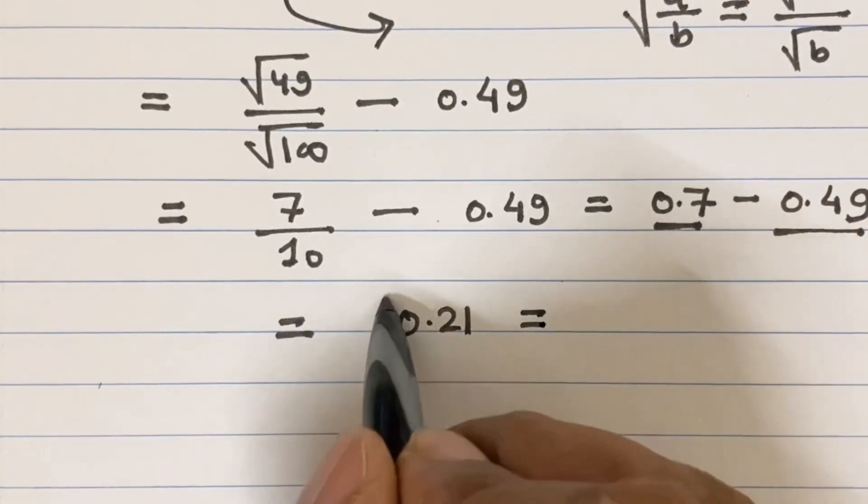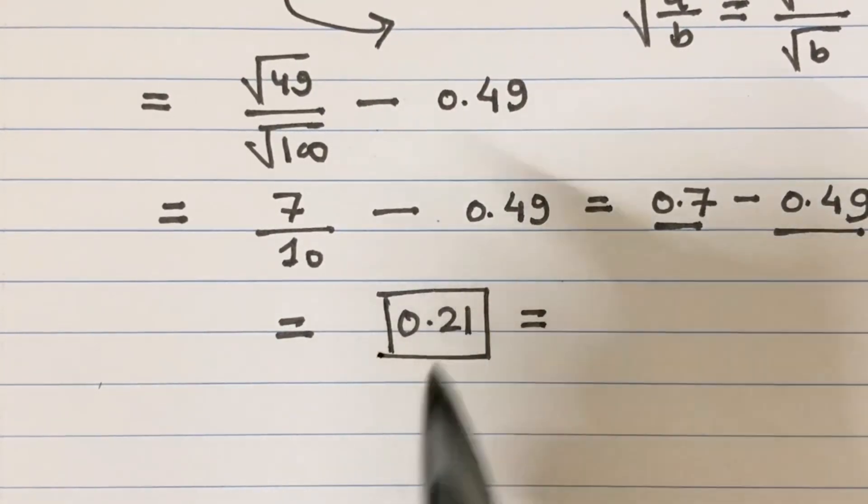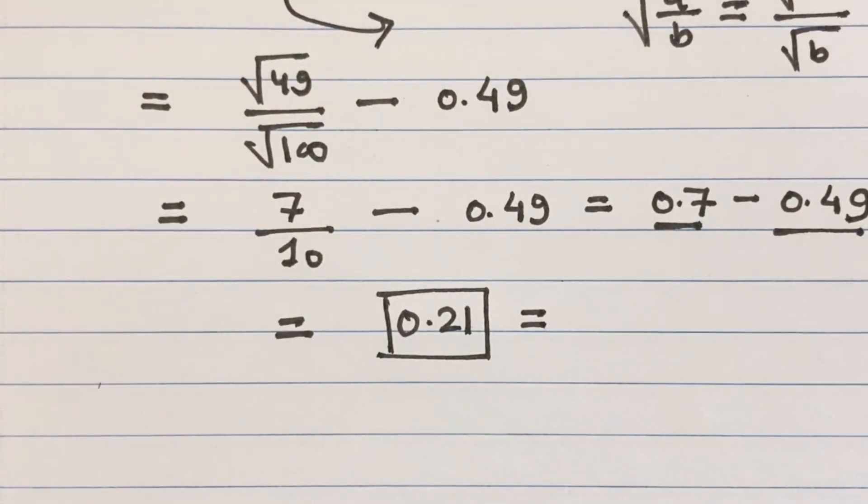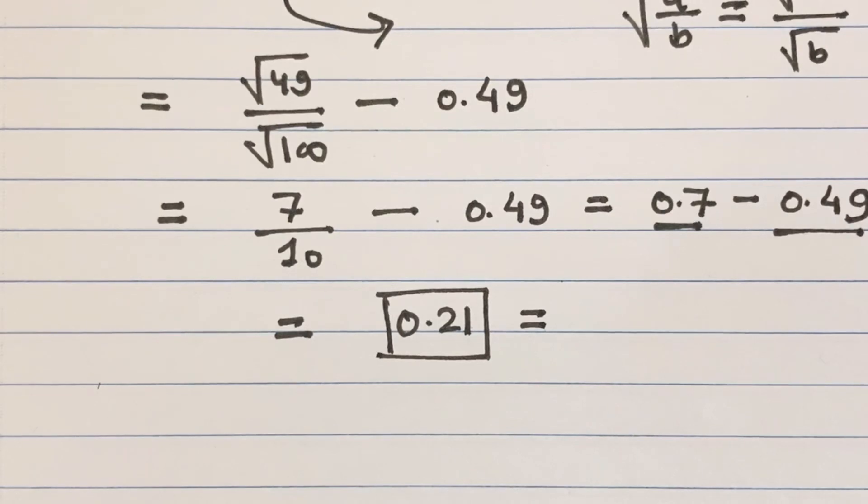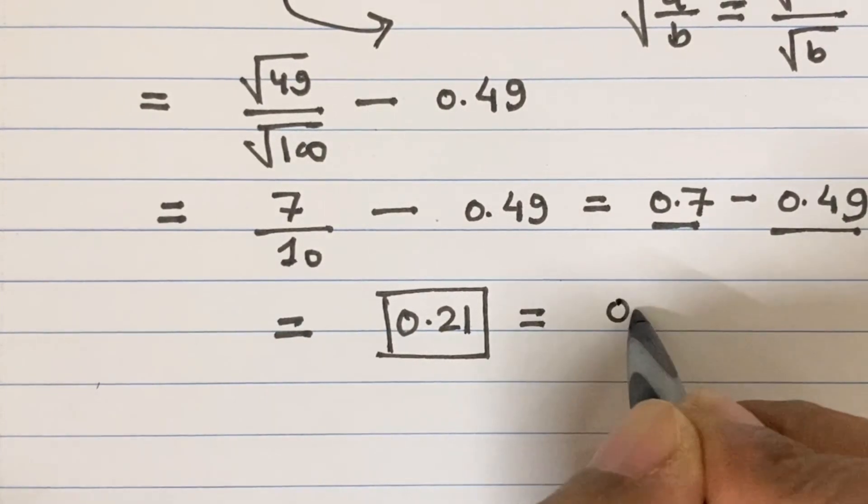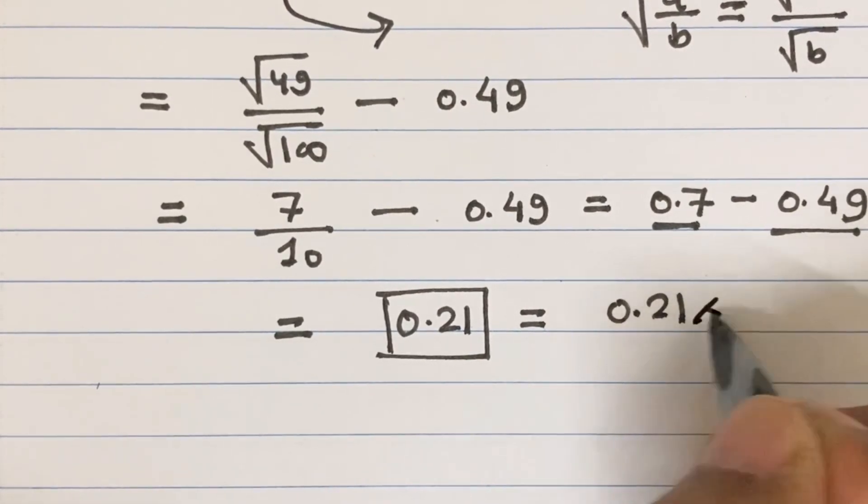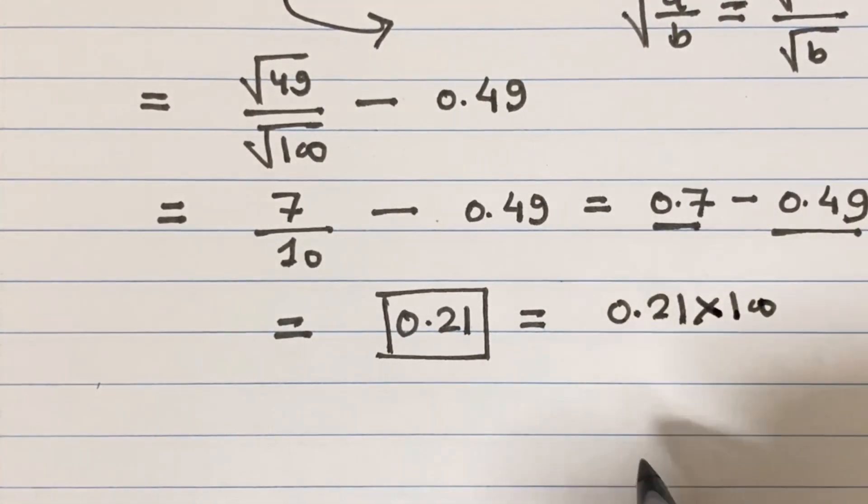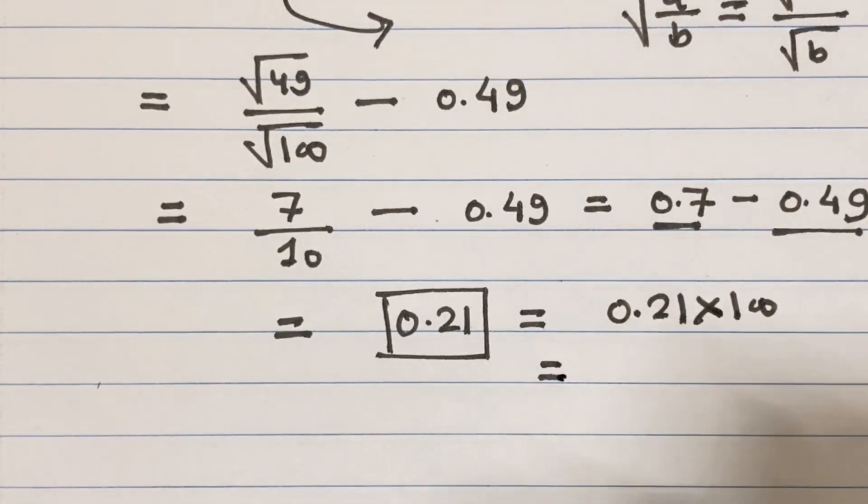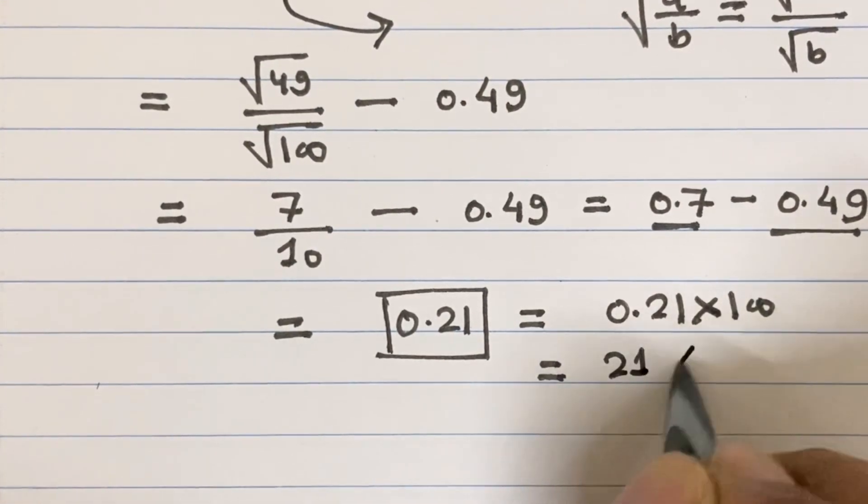Now we need to convert the 0.21 into percentage form. As we know that percentage equals 1 divided by 100, so 0.21 multiply 100 equals 21 percent.